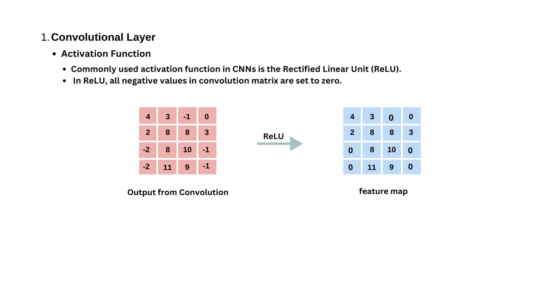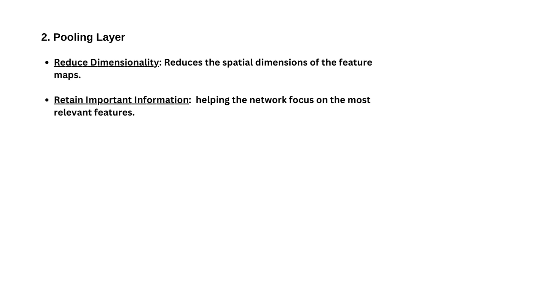Convolution layers are then followed by pooling layers. Pooling layers reduce the spatial dimensions of the feature maps. Feature maps are the convolution matrix we got in the previous step. Pooling makes the data more manageable and speeds up computations. Pooling retains the most important information from the feature maps, helping the network focus on the most relevant features.